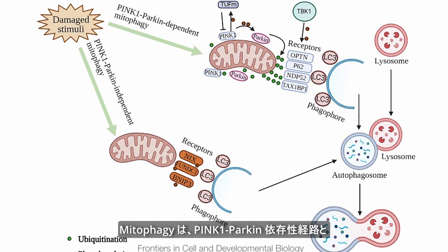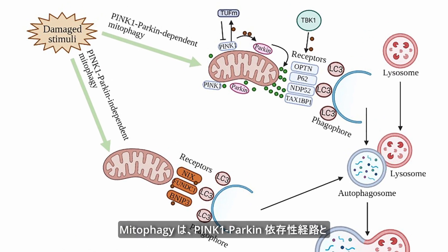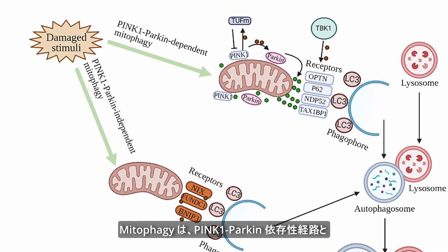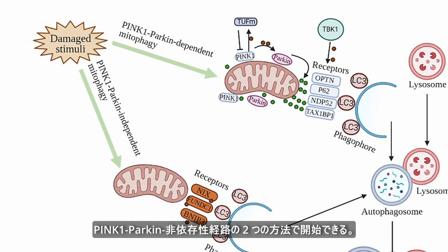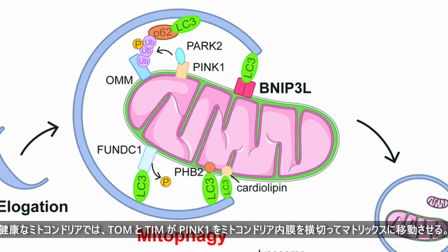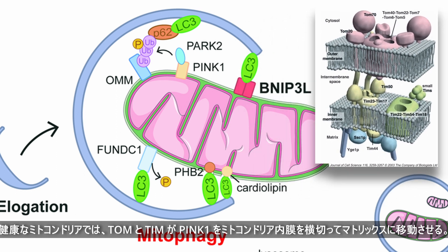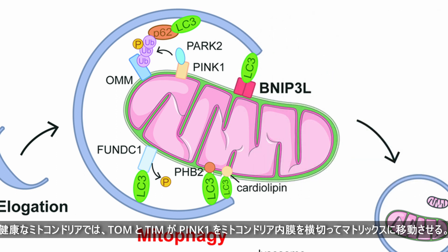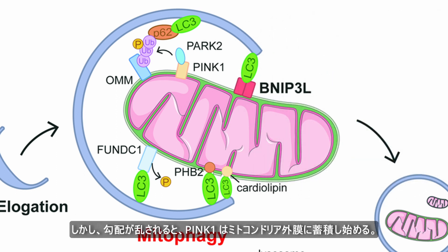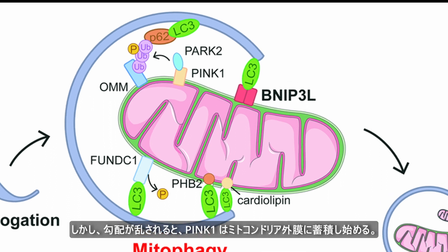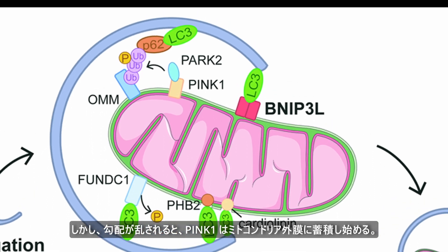Mitophagy can be initiated in two ways: via the PINK1-Parkin-dependent pathway and the PINK1-Parkin-independent pathway. In healthy mitochondria, Tom and Tim translocate PINK1 across the inner mitochondrial membrane into the matrix. However, when the gradient is disrupted, PINK1 begins to accumulate on the outer mitochondrial membrane.